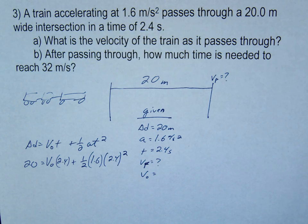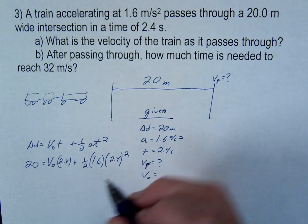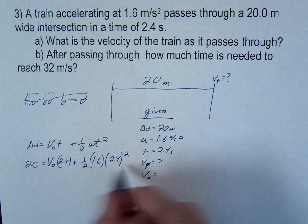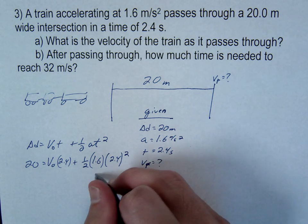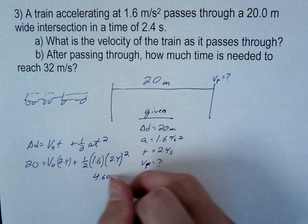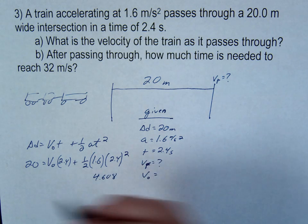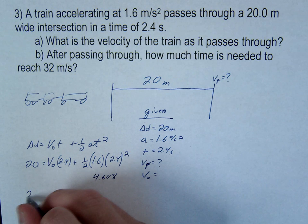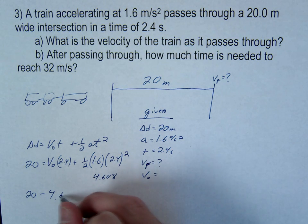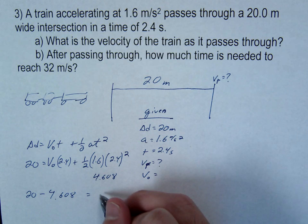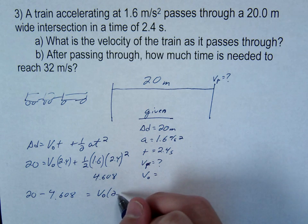Go ahead and do the algebra. A lot of people mess up on this algebra from time to time. Can someone give me the number just for this? I'll do the algebra. 4.608. 4.608, that's the second half right here. Okay, so then you're going to subtract that, right?